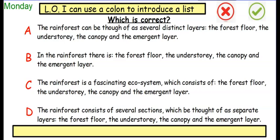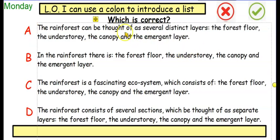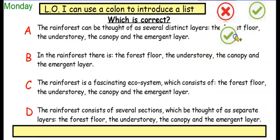The rainforest can be thought of as several distinct layers: the forest floor, the understory, the canopy and the emergent layer. Is that correct or not? Well, the rainforest can be thought of as several distinct layers — does this bit make sense on its own? Yes, it does. Therefore the colon has gone after it and then we've got a simple list afterwards. I'm going with a tick — this one is correct.